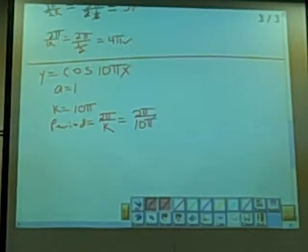And what happens to the π? They cancel. And 2 can go into 10. So our period is just 1/5.